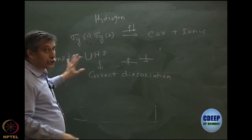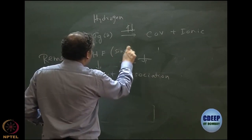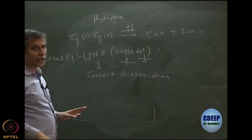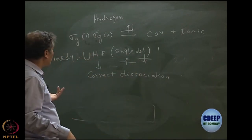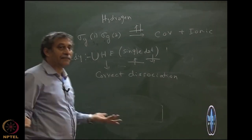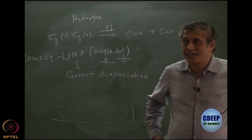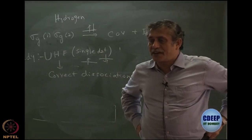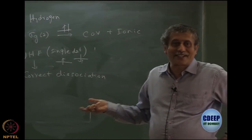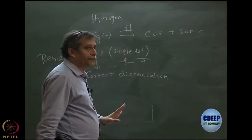But UHF is also a single determinant picture, and this single determinant picture gives more or less correct dissociation except that now there is confusion about what state we are getting, because it is no longer spin-adapted. If we do unrestricted Hartree-Fock, it is no longer spin-adapted, so we are not sure what state we are getting. This is not really a very good way of doing it.